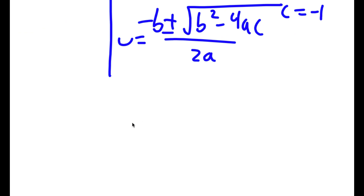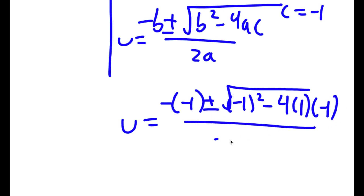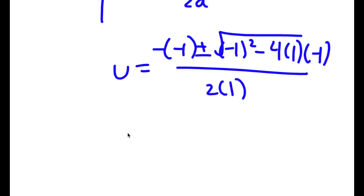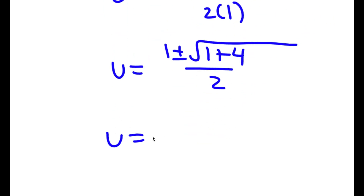So I have u is equal to negative of negative 1 plus or minus the square root of negative 1 squared minus 4 times 1 times negative 1, all over 2 times 1. And this is equal to 1 plus or minus the square root of 1 plus 4 over 2, which equals 1 plus or minus the square root of 5 over 2.